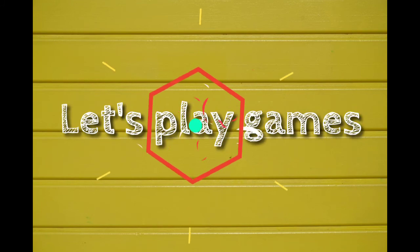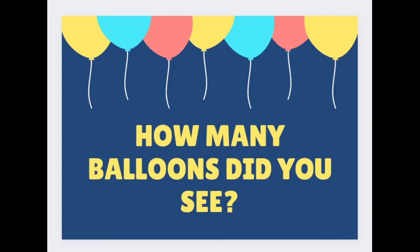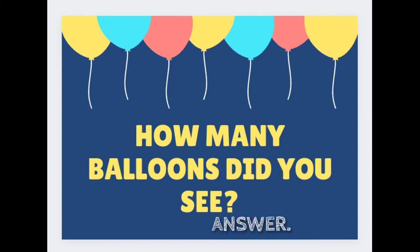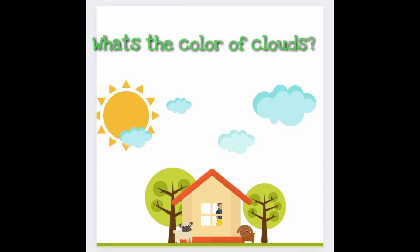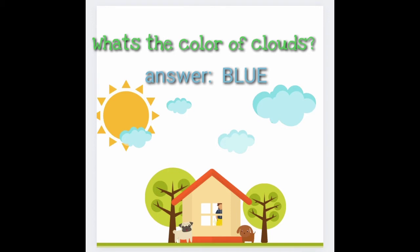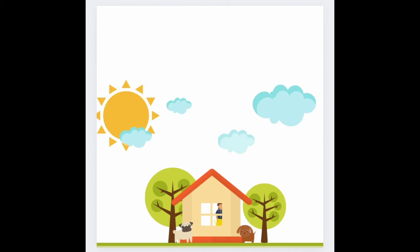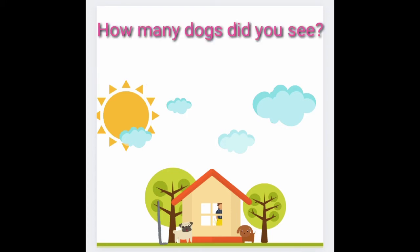Let's Play Games! How many balloons did you see? Seven. What's the color of the clouds? Blue. How many dogs did you see? Two.